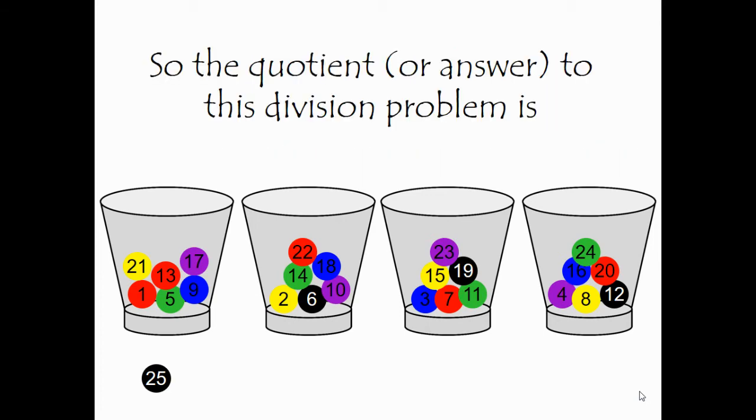So the quotient, or answer, to this division problem is six because there are six marbles in each cup, remainder one because I had one marble left over. The R stands for remainder.